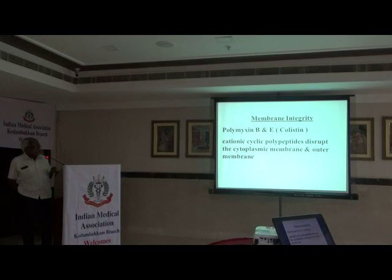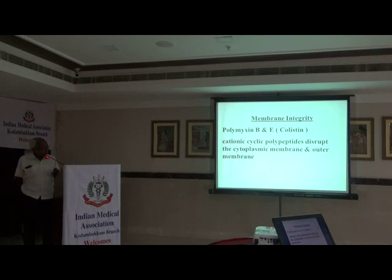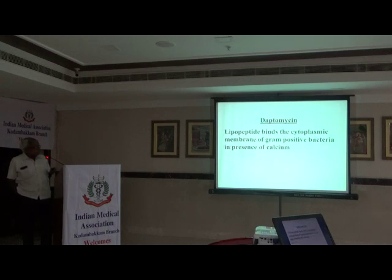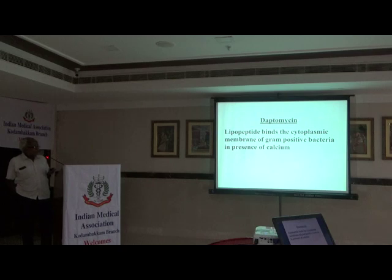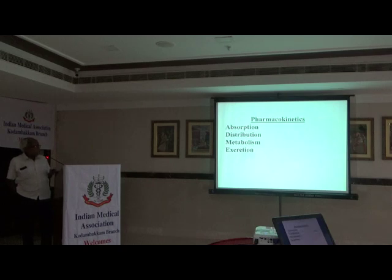Disruption of membrane integrity: cationic cyclic polypeptides disrupt the cytoplasmic membrane and outer membrane — two membranes exist, one for gram-positive and two for gram-negative organisms. They are disrupted with polymyxin-type compounds. Lipopeptides binding to the cytoplasmic membrane of gram-positive bacteria are represented by daptomycin.